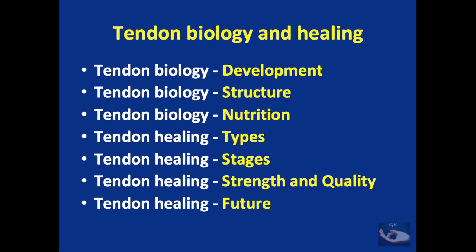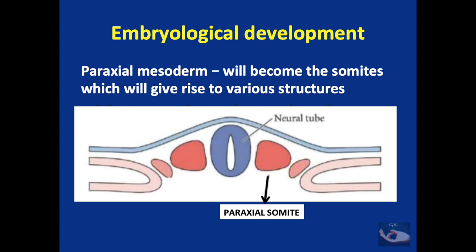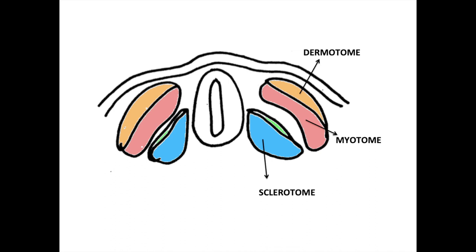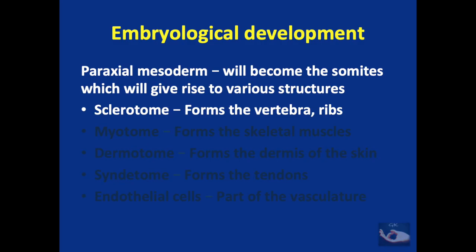This will be the general flow of this video. The development process of the tendon is very unique. The paraxial mesoderm on either side of the neural tube gives rise to the paraxial somite. This somite gives rise to the sclerotome, the dermatome, and the myotome. And between the sclerotome, which gives rise to the bone, and the myotome, which gives rise to the muscle, the syndetome arises.